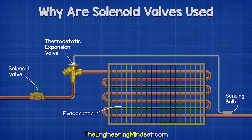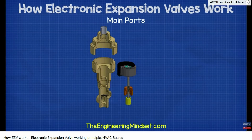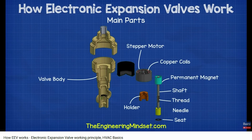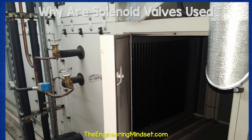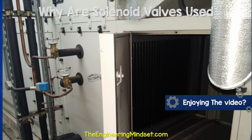In commercial refrigeration systems, we're almost certainly going to find at least one solenoid valve in the system, and it's usually found in the liquid line near the expansion valve. We've also covered how expansion valves work in a previous video — links are in the video description below. You can see this example here from an air handling unit which I was recently working on.